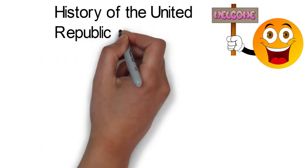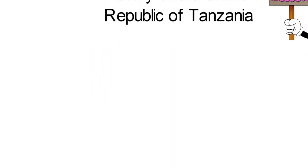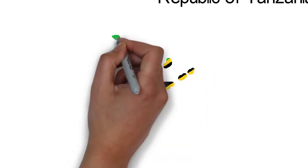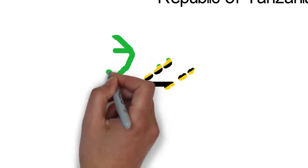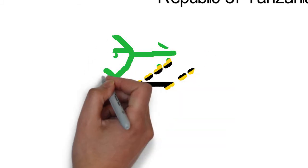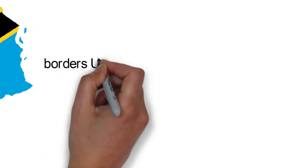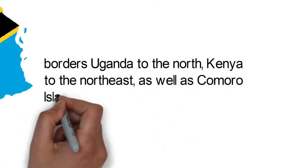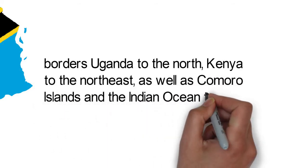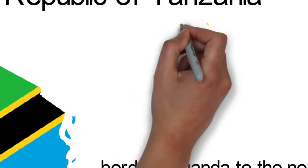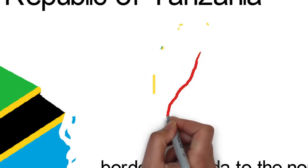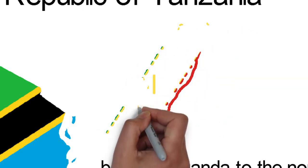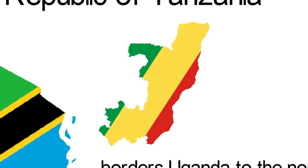History of the United Republic of Tanzania. With a population of about 60 million, the United Republic of Tanzania is a country in East Africa within the African Great Lakes region. Tanzania borders Uganda to the north, Kenya to the northeast, as well as Comoro Islands and the Indian Ocean to the east. To its south are Mozambique and Malawi, Zambia to the southwest, with Rwanda, Burundi, and the Democratic Republic of the Congo to the west.